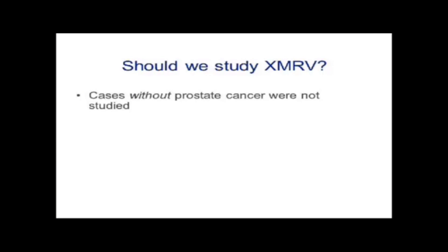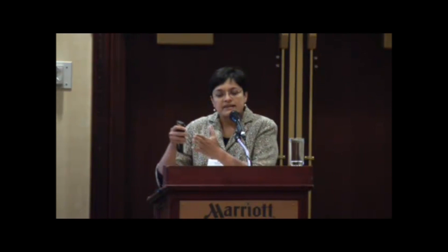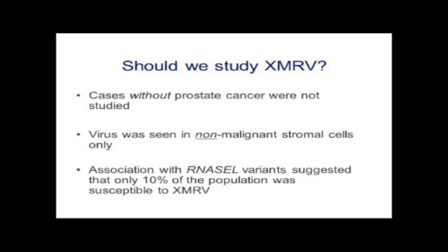The original study did not include patients without prostate cancer. Another puzzling finding was that the virus was only seen in non-malignant stromal cells. No known retrovirus that causes cancer is present in a benign cell while the tumor is in another cell — they are all present in the malignant cell. So this didn't fit. Additionally, the association with the RNase L variant suggested only 10% of the population was susceptible to XMRV, since only 10% has this RNase L variation. So we were looking at even a subset of that 10%.